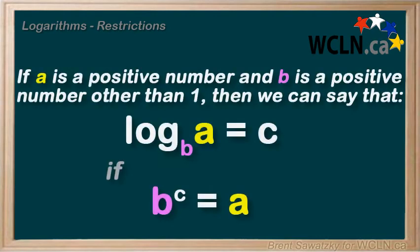It's a good time to look into the log restrictions now, and we'll start by looking at the dictionary definition of a logarithm. If a is a positive number and b is a positive number other than one, then we can say that log base b of a is c if b to the power of c equals a.